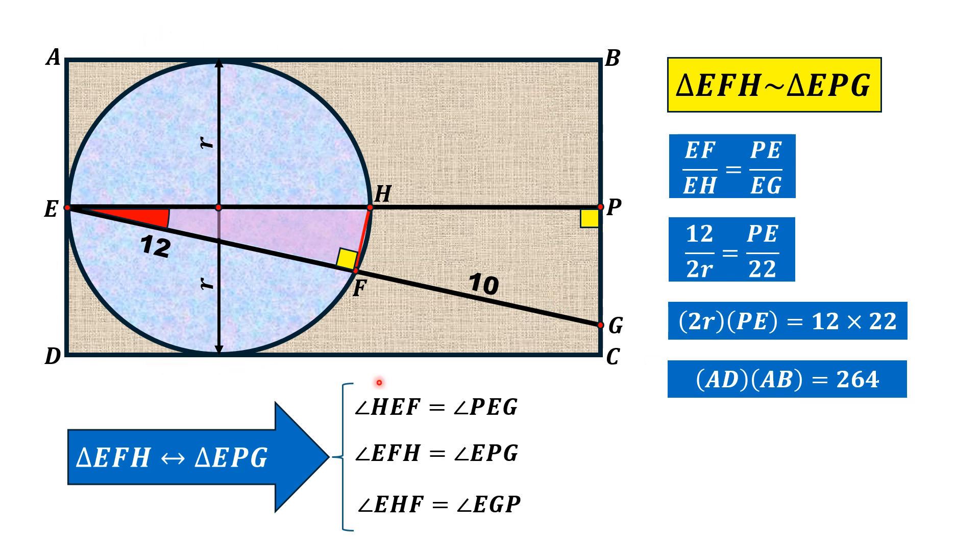AD times AB is actually the length times breadth of the rectangle which is actually the area of this rectangle ABCD. Thus, area of rectangle ABCD is equal to 264 square units. That is the answer. Thank you for watching.